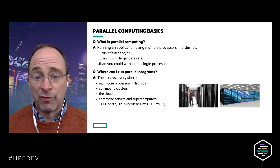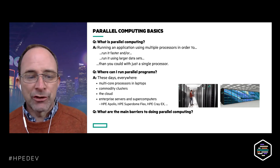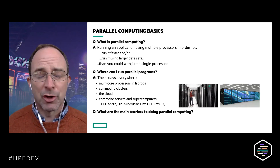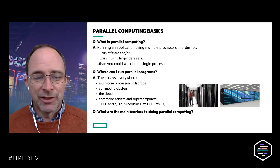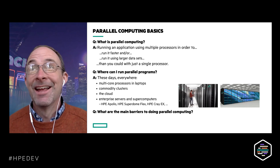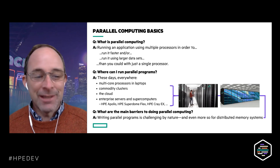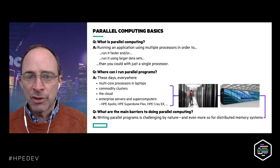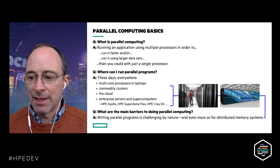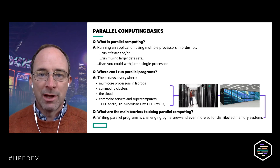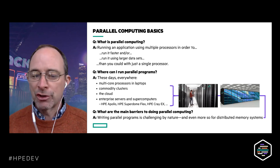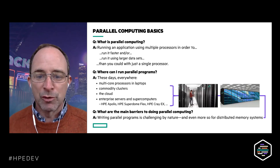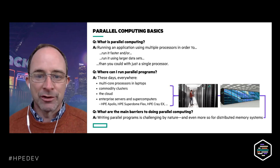The main barriers to parallel computing: historically it was about access to parallel systems, but that's not really the case anymore. Today the main barrier is writing the parallel programs themselves. Parallel programming is challenging by nature — it's like getting a hundred friends to help with your homework. You might finish a hundred times faster, but there's coordination to ensure everyone's working cooperatively, not stepping on each other's toes. The same is true when coordinating hundreds or thousands of processors.